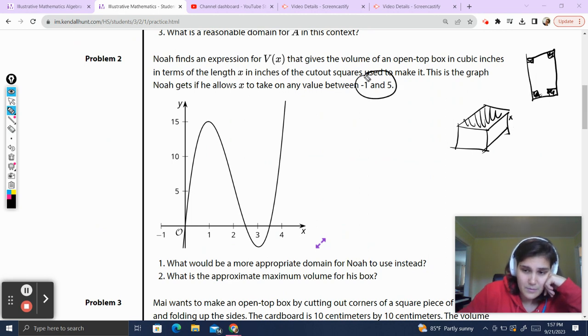In terms of the length in inches of the cutout squares that he used to make. So we had our rectangle piece of paper. We cut out the squares of the corners like that, and we folded them up to make a box. So the length of the squares ends up being the height of the box. So this is the graph Noah gets if he allows x to take any value between negative 1 and 5. What would be a more appropriate domain for Noah to use instead?